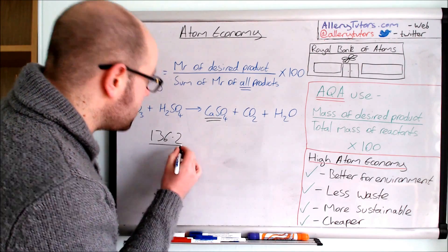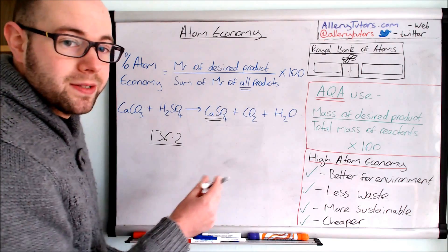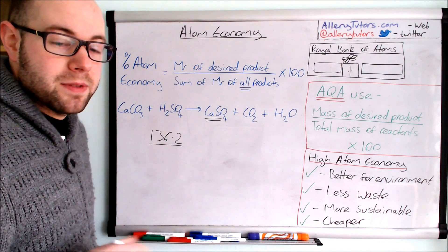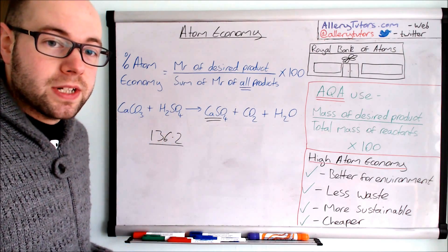And then we're going to divide that by the sum of the MR of all products or the total mass of reactants. The number is going to be the same, it's just formalities in this case, and so in this reaction it's going to be 198.2.